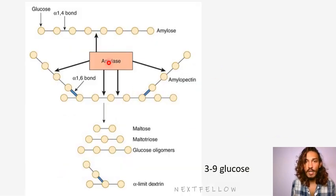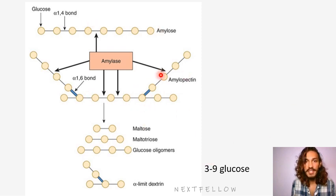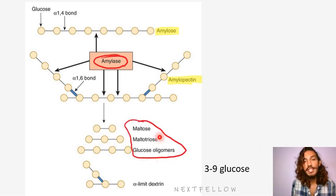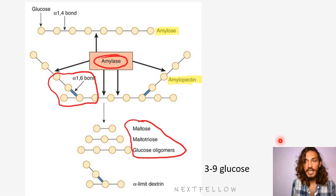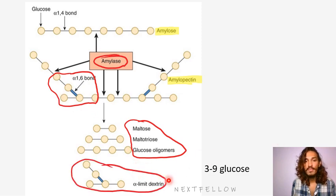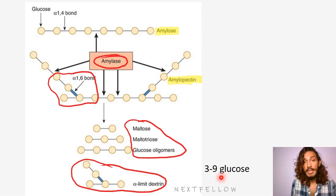You can see amylase acting on amylose as well as amylopectin. The final degradation products: amylose and the straight parts in amylopectin will all give out maltotriose, maltose, and glucose oligomers as mentioned earlier. Because of the 1-6 linkage bonds, this part will come out extra as alpha-limit dextrins — these will be like 3-9 glucose molecule containing substances. This is the final degradation product that eventually comes.